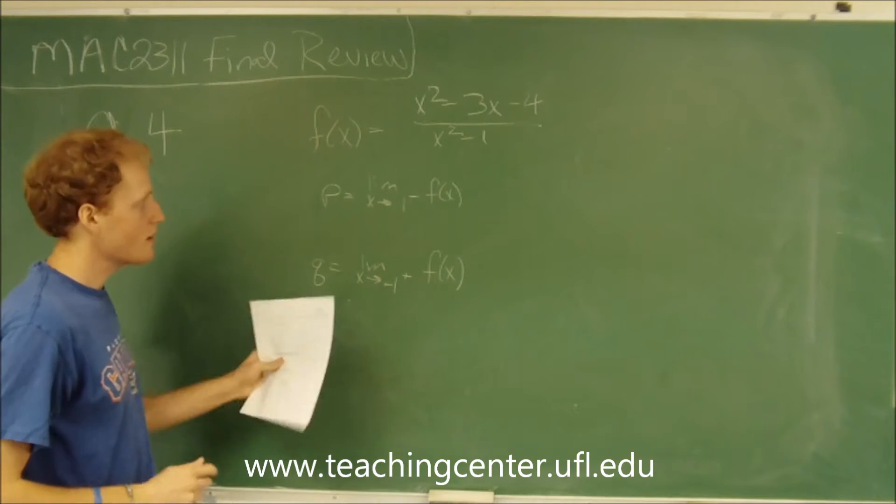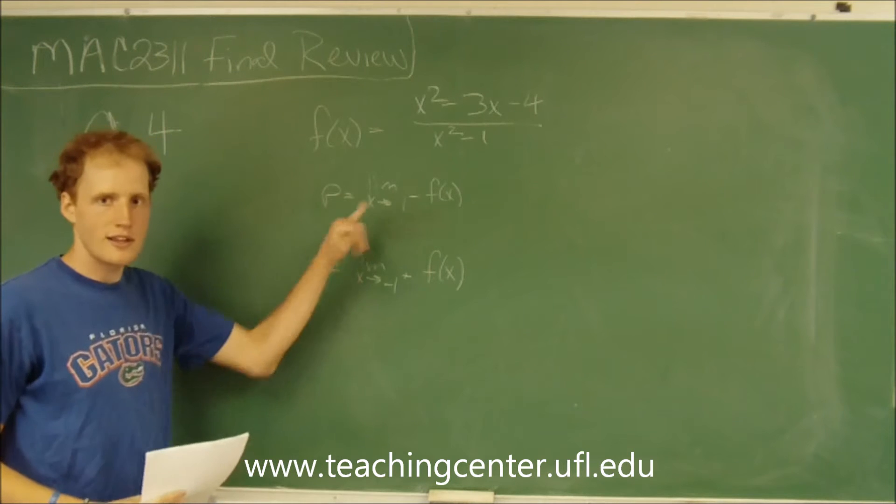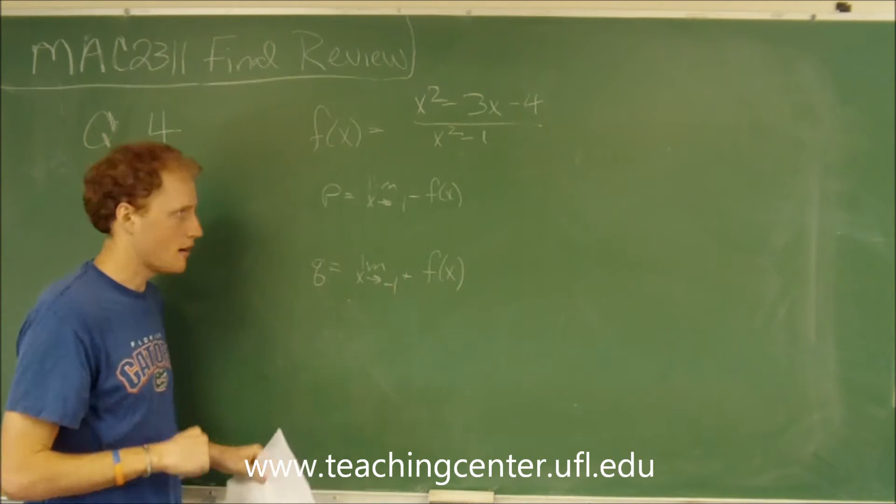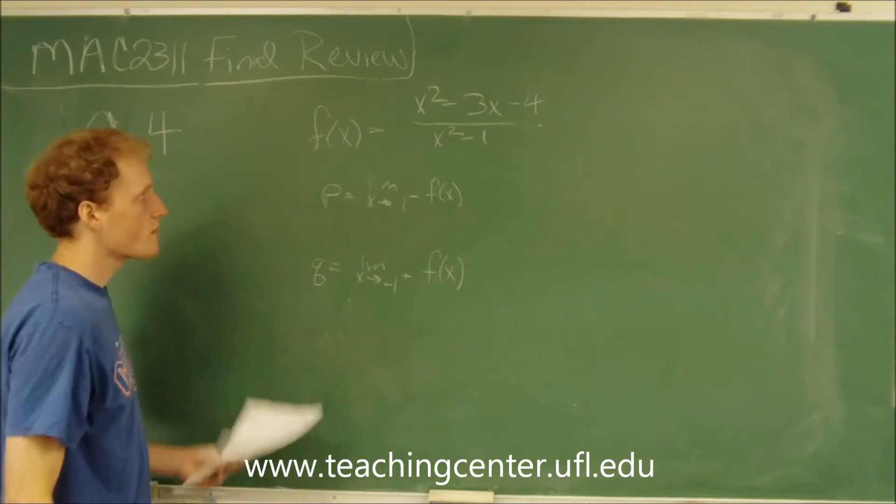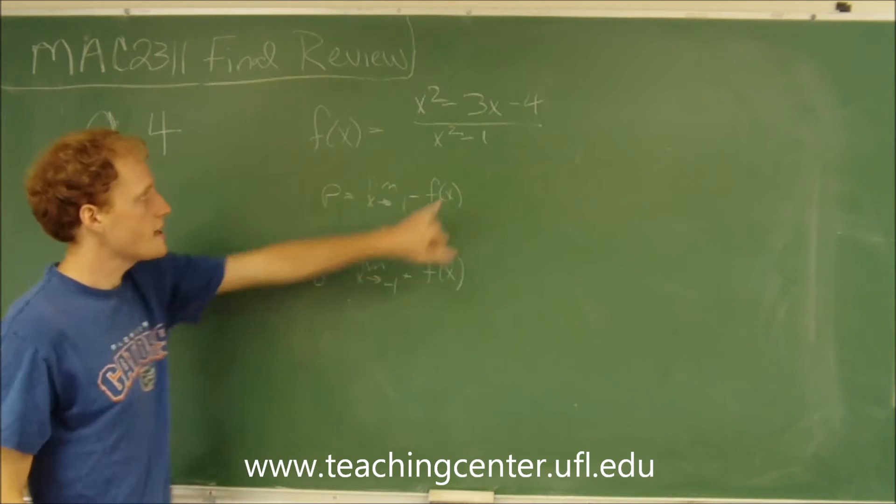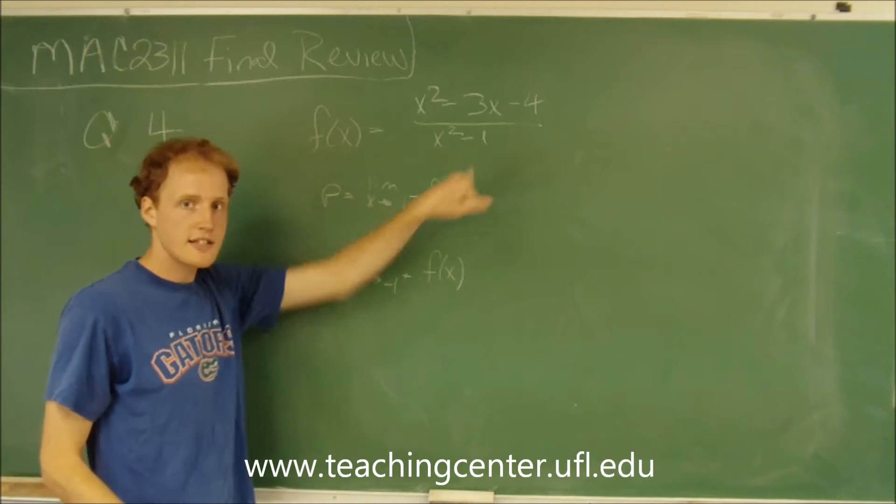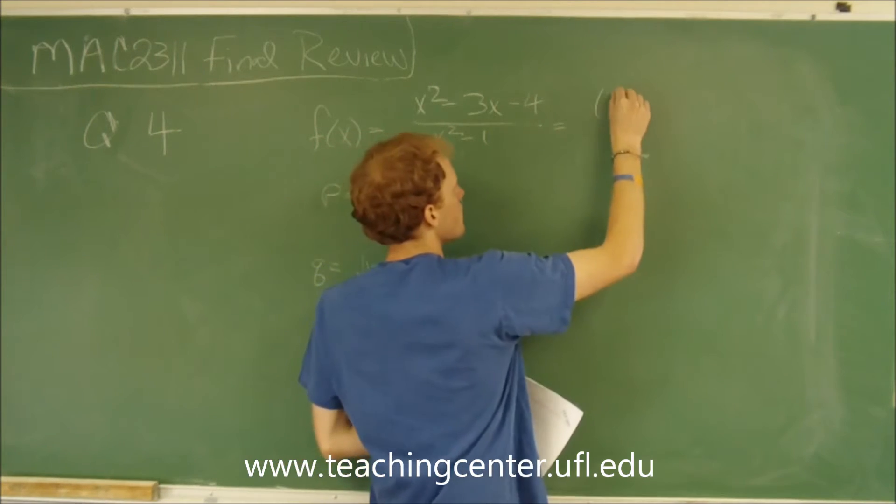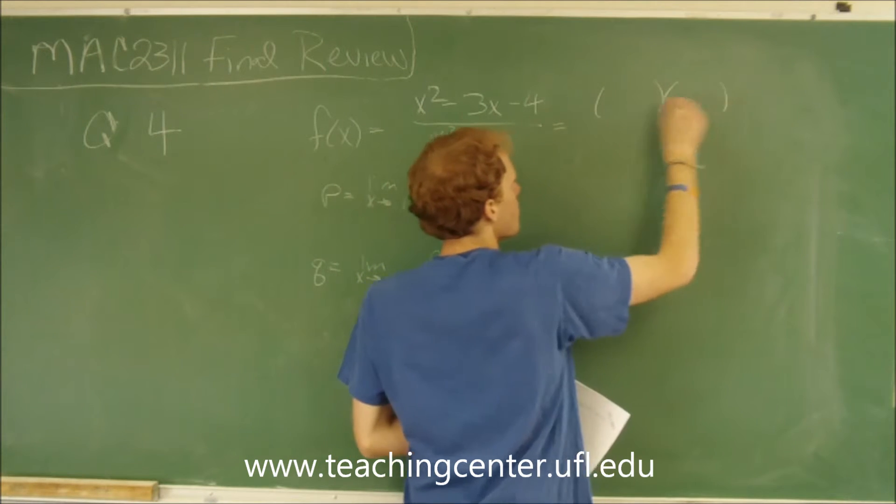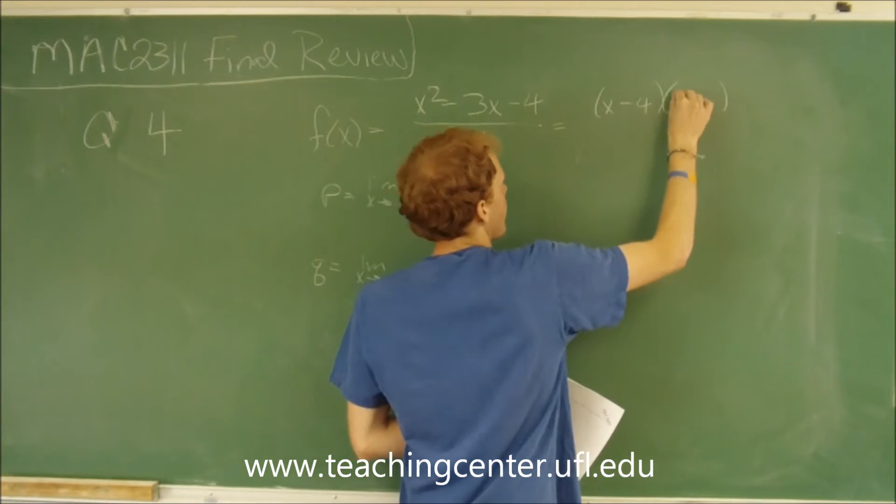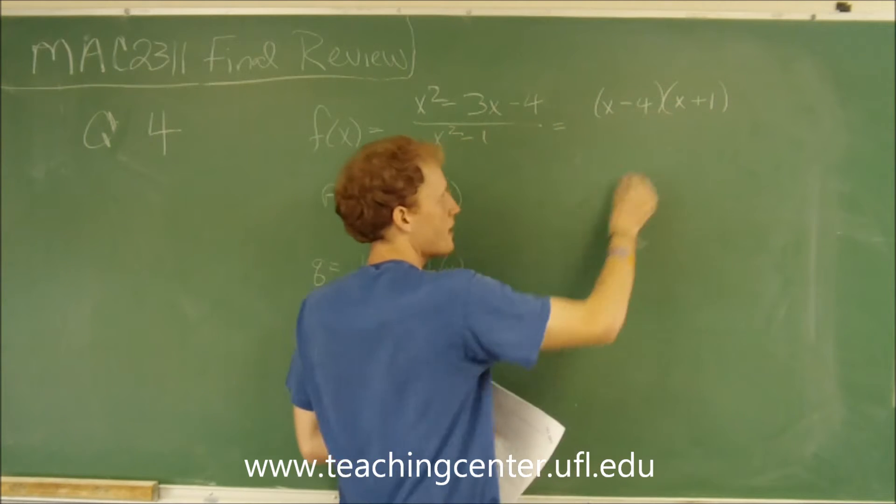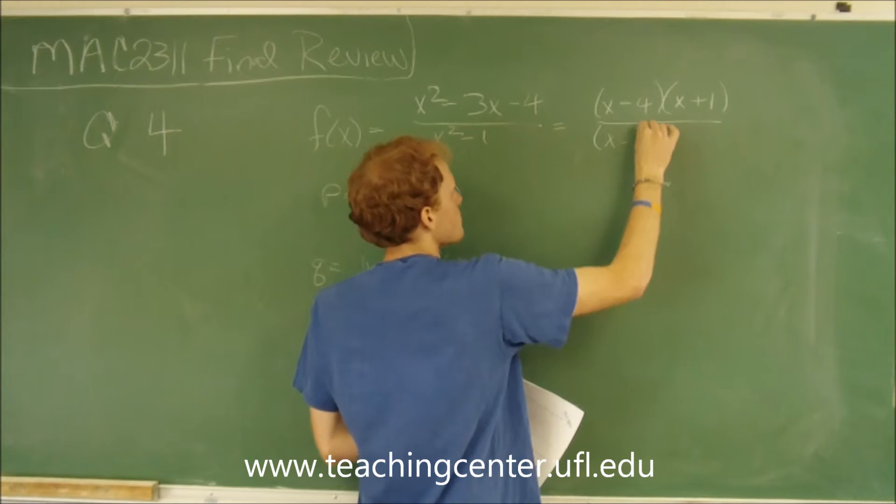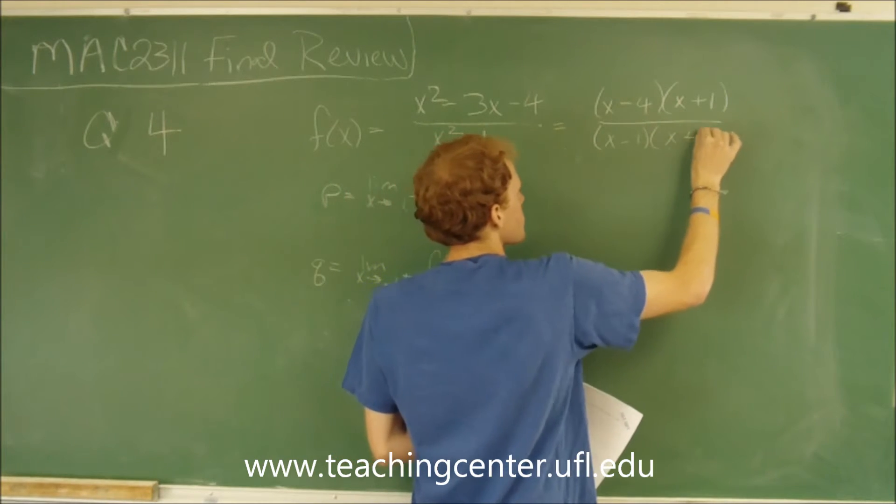To evaluate this problem, we have to evaluate these limits and find what p and q are. First thing we may want to do is try and see if this f(x) factors. It factors into x minus 4 and x plus 1. And the denominator factors into x minus 1 times x plus 1.